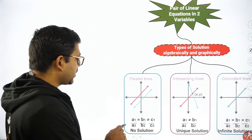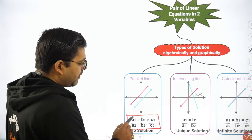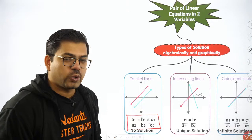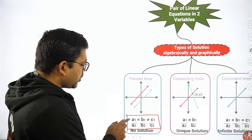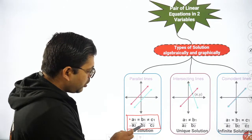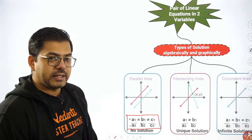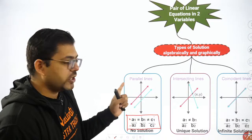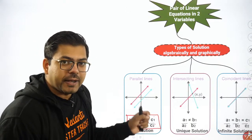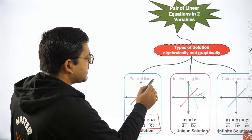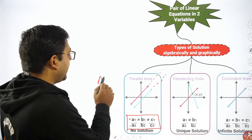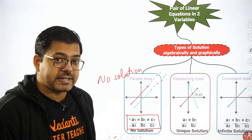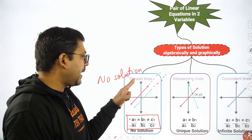These three cases can be determined without even solving the equation — just by using the coefficients. If a1/a2 = b1/b2 but not equal to c1/c2, that gives us the condition of parallel lines. In parallel lines there is no intersection, and hence we call it a no solution condition. Write it down: parallel lines → no solution.